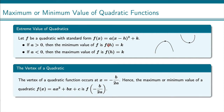Similarly, if a is negative, then we know we are opening downward. And if we're opening downward, we know we have a maximum, and that also will occur at the vertex.